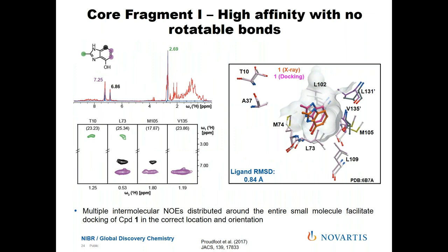As you can see on the right-hand side, there is a superposition of the small molecule generated from the docking protocol in magenta with the actual crystal structure. HADDOCK was able to produce a cluster, and the best representative of this cluster had a ligand RMSD of 0.84 Å to the crystal structure. This was a very good result and gave us confidence going forward that HADDOCK can use this experimental data to dock small molecules successfully.